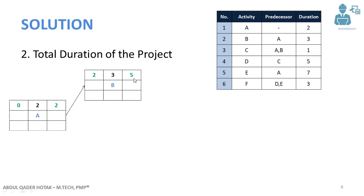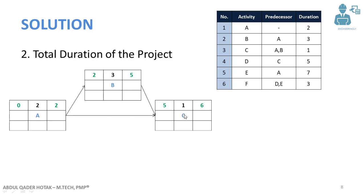Then we have activity C, whose predecessors are activity A and B. The earliest we can start activity C is when both A and B are finished. Activity A ends on day 2, activity B ends on day 5. Since both must be finished, we write the early start as 5. Adding the duration of activity C (which is 1) gives us an early finish of 6 for activity C.